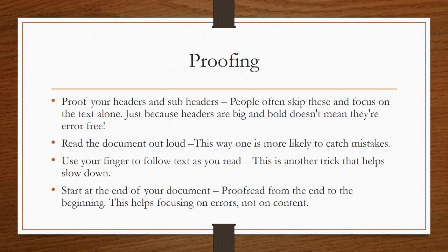Start at the end of your document — proof read from the end to the beginning. This helps focus on errors, not on content. If you read the last paragraph first and then work backwards, your focus will not be on the story but on proofreading and identifying errors. In this way, you can avoid grammatical errors.